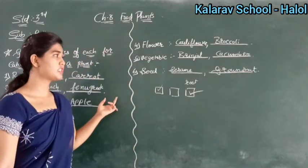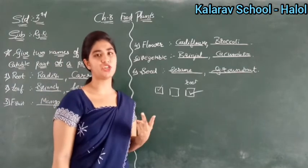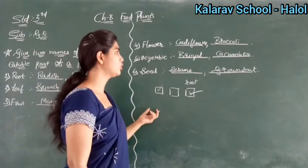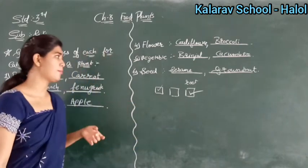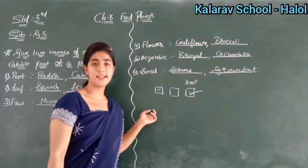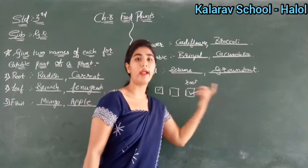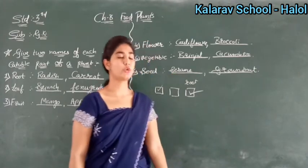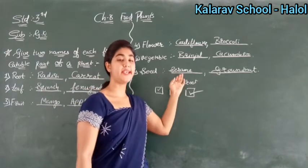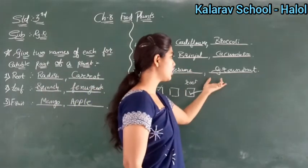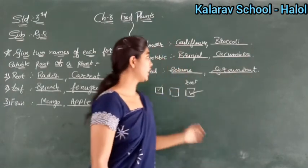Then it is vegetable. Which vegetables are there? Brinjal and cucumber. In your book these two vegetables are given — brinjal and cucumber — but you can write other names you remember too. Then it is seeds. Which seeds do we eat? Groundnut seed and sesame seed. You can write other seed names also here. Spelling of sesame: S-E-S-A-M-E, sesame. And groundnut: G-R-O-U-N-D, groundnut.